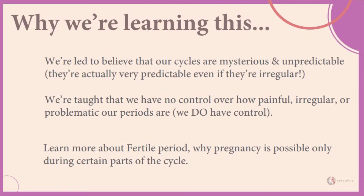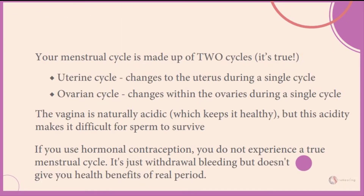To keep it simple, let's break down your menstrual cycle into two parts: the changes which happen in the uterus, which is called the uterine cycle, and the changes that occur at the level of the ovary, which is called the ovarian cycle.